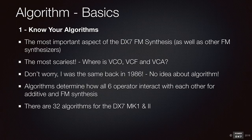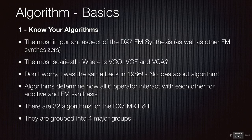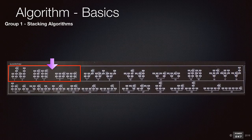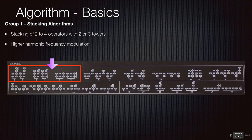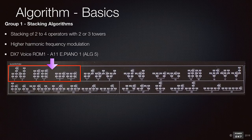For the DX7, there are 32 algorithms to choose from, and they are grouped into four major groups. The first group is stacking algorithms. You have two to four operators stacked on top of one another with two or three towers in total. When you have three or more operators stacked on top of one another, you can get higher harmonic frequency modulation, like a string sound, for example. The famous DX7 E-Piano 1 patch uses algorithm 5.